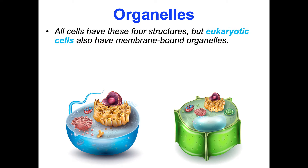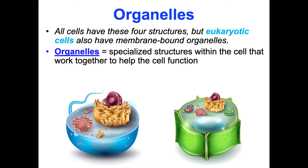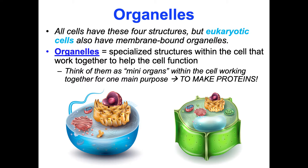Eukaryotic cells also have extra organelles — specialized structures that work together to help the cell function. Think of them as mini organs within the cell; they work toward making proteins. Different cell types have different compositions of organelles — for instance, skeletal muscle cells have a ton of mitochondria because they need lots of energy. A key theme of biology is that form dictates function: structure determines what something does.